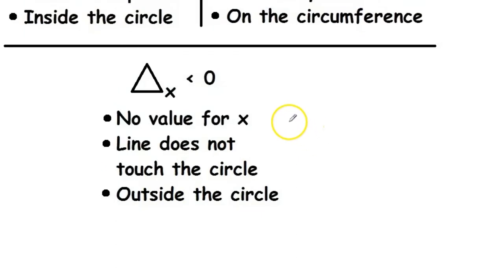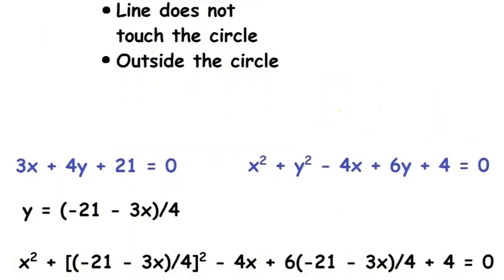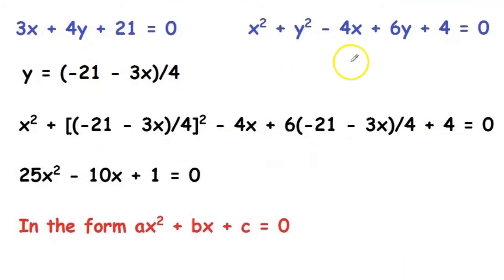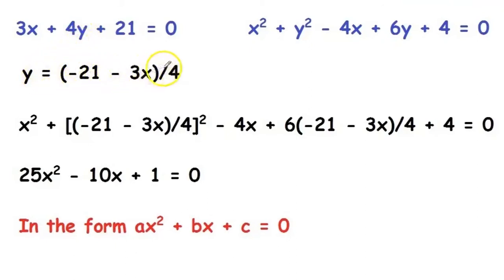So by using the discriminant we can tell the position of the line with respect to a circle. Let's try out an example to understand this better. We have to find the position of the line 3x + 4y + 21 = 0 with respect to the circle x² + y² − 4x + 6y + 4 = 0. First we make y the subject from the line equation: y = (−21 − 3x) / 4.